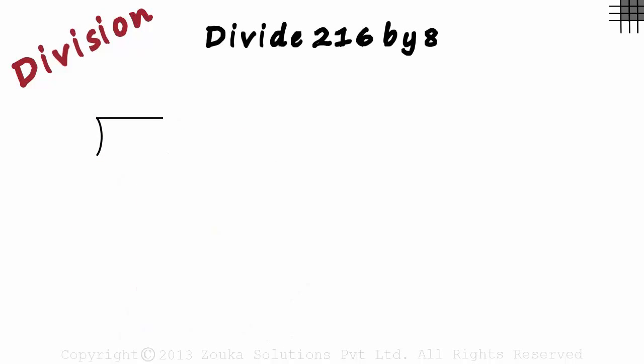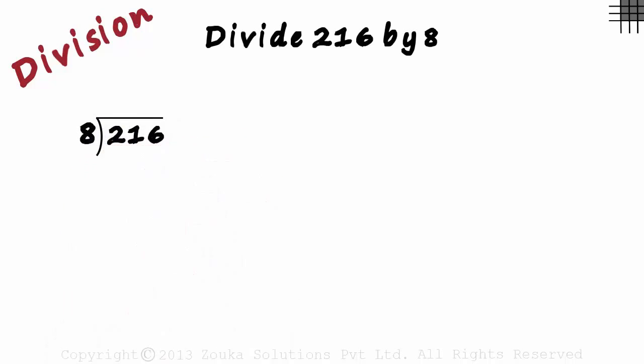So let us divide 216 by 8. Yes, the traditional way where we write 216 like this and 8 next to it. After solving, we get the quotient as 27 and the remainder as 0.